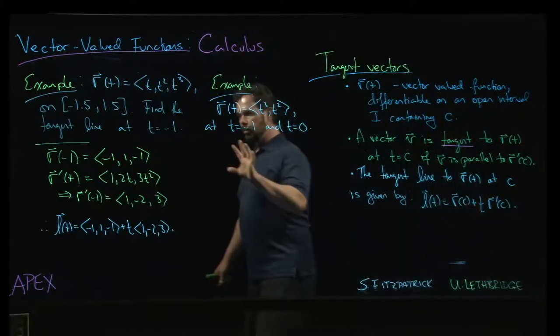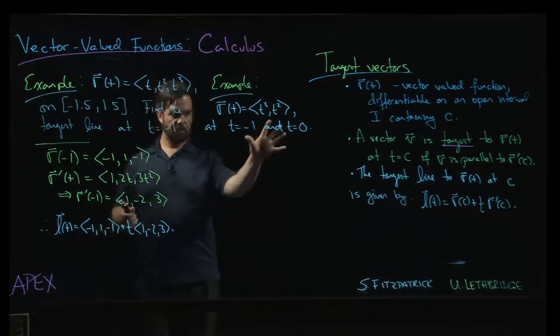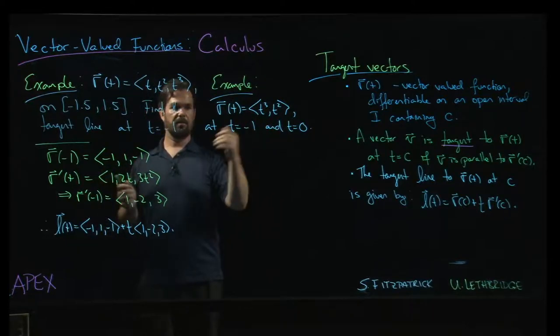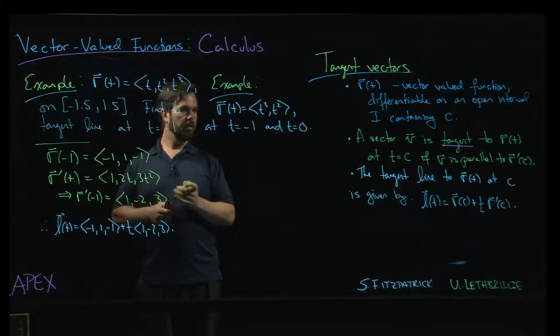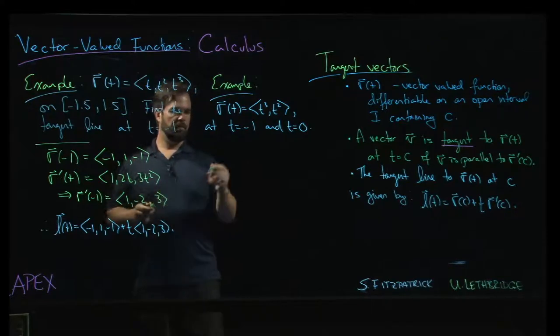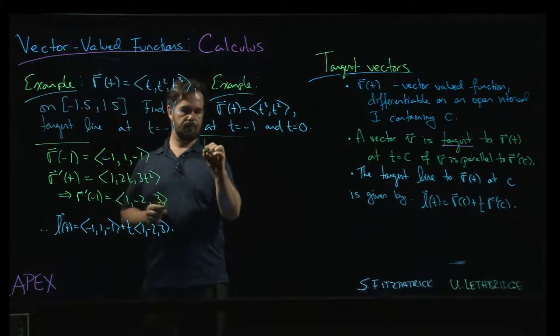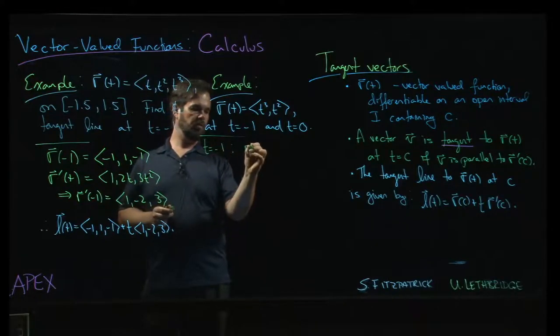Let's look at another example finding tangent lines to curves that are defined by vector-valued functions. This time we're looking at a curve in the plane. So we'll do t equals minus 1 first.